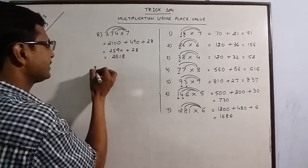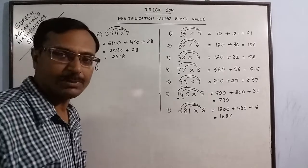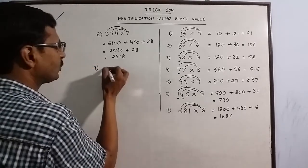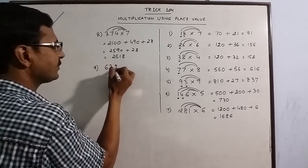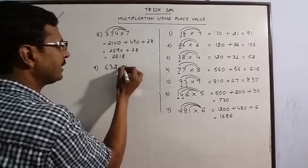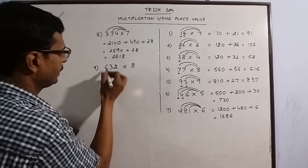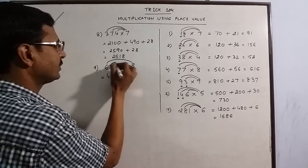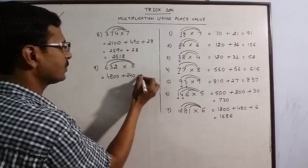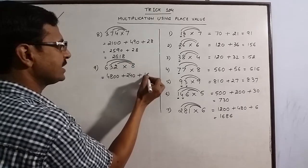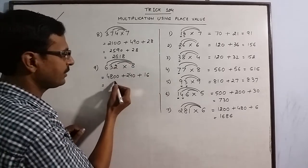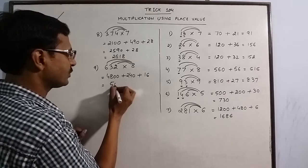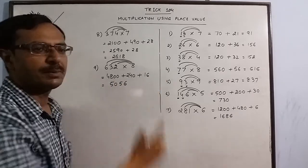Likewise, more examples. You can have 4 digit numbers also. I will take 3 digit numbers first. Say you have 632 multiplied by 8. 6 8's are 48, double zero. 3 8's are 24, single zero. 2 8's are 16. So 4800, 5040. So 5056 is the product.